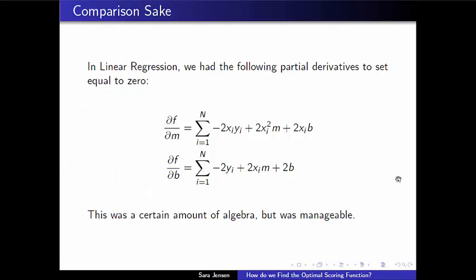And there was a certain amount of algebra involved in setting those equal to 0 and solving for the letters m and b in terms of the other things. But it was very manageable, and it was something that you could do by hand. And even if you wanted to go up to a quadratic model, you could do that by hand. And it wouldn't necessarily be pleasant, but it was absolutely doable.